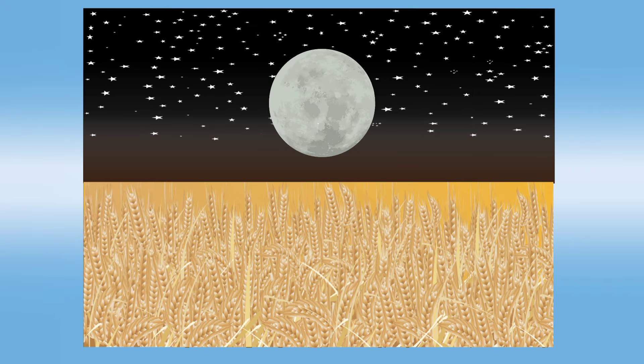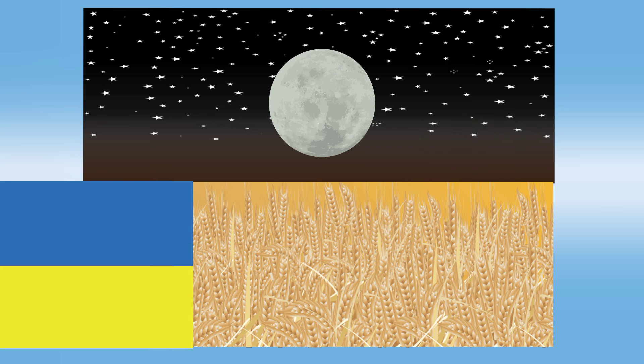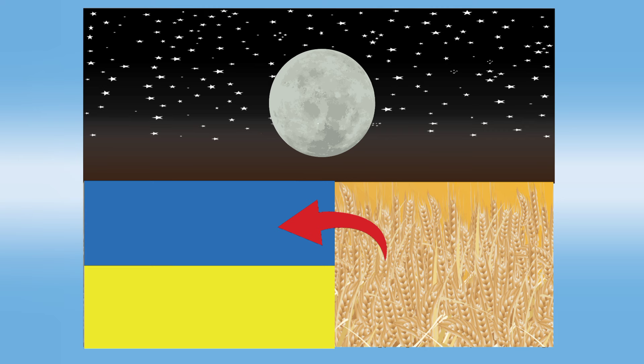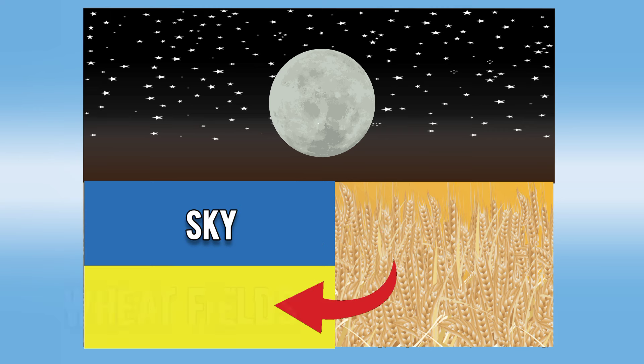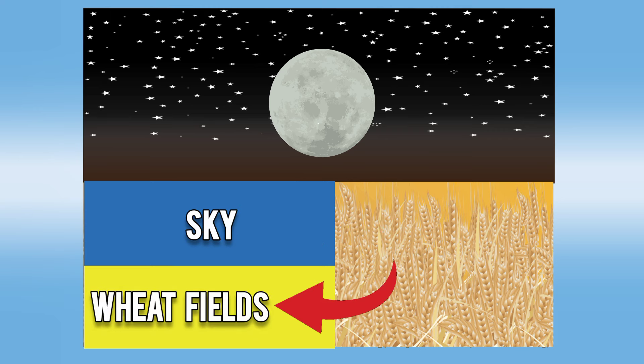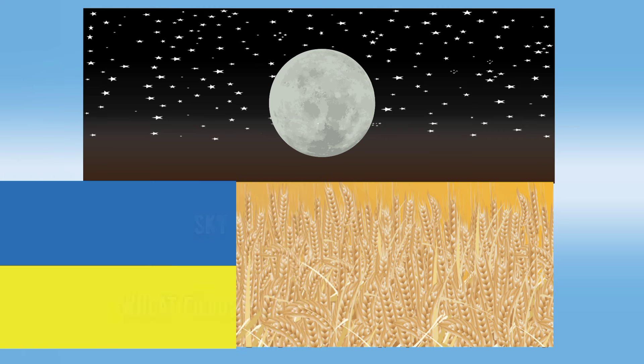If you don't know why wheat fields are on this flag, let me tell you that the blue color on the flag of Ukraine represents the sky, and the yellow or golden color represents wheat fields.